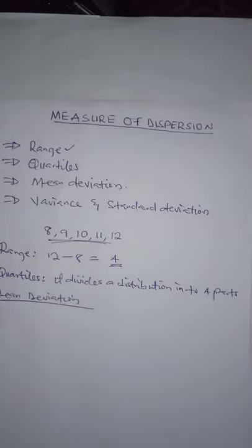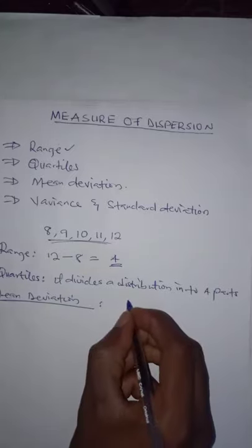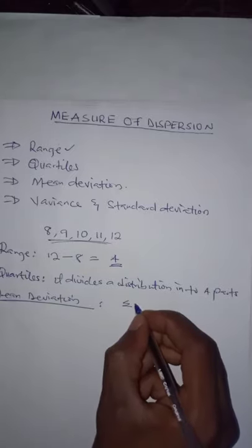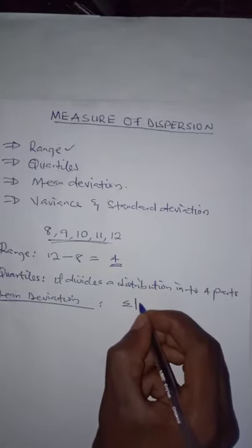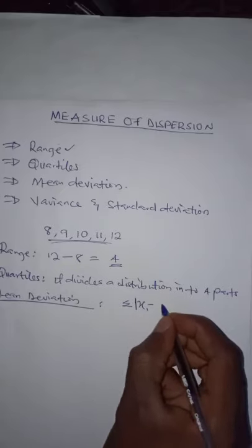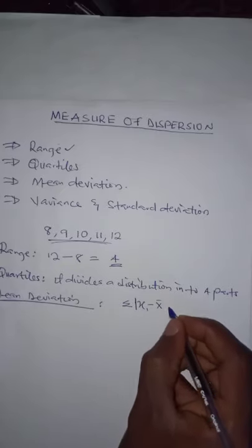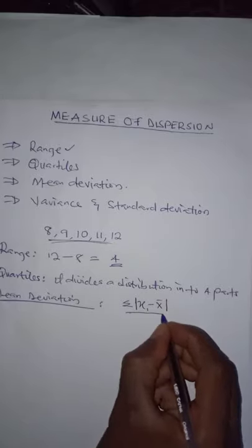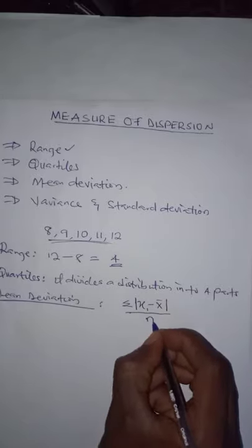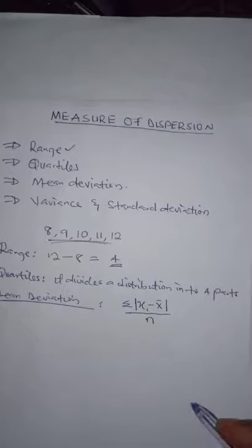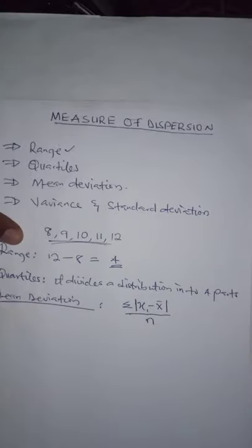For mean deviation, which is also very important in statistics as a measure of dispersion, the mean deviation is the arithmetic mean of all the absolute deviations from the mean. It is the sum of all the absolute deviations from the mean X-bar, divided by n. This formula is for population data.